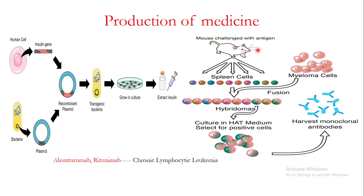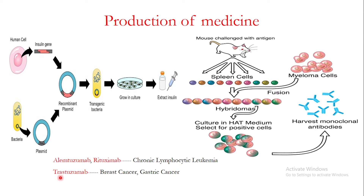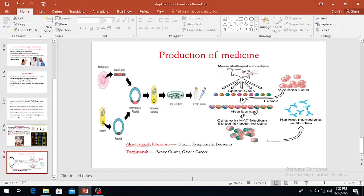For example, cancer is a challenging problem in medical sciences, but monoclonal antibodies can help. Obinutuzumab and rituximab are monoclonal antibodies used for the treatment of chronic lymphocytic leukemia. Trastuzumab is another example, used for the treatment of breast cancer and gastric cancer. These are some of the important applications in the field of genetics.